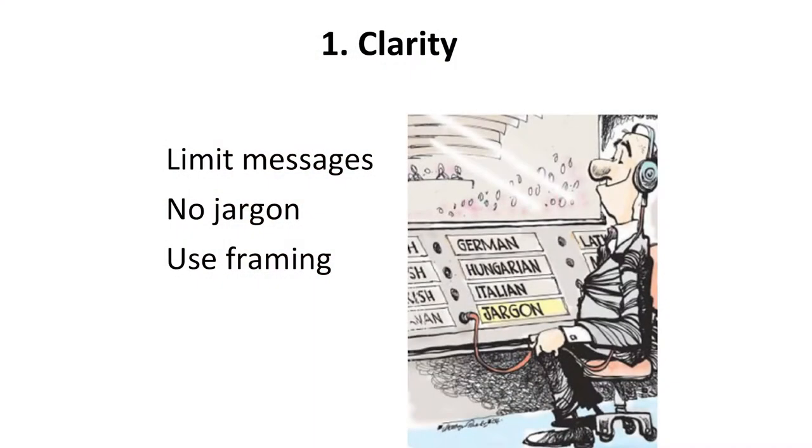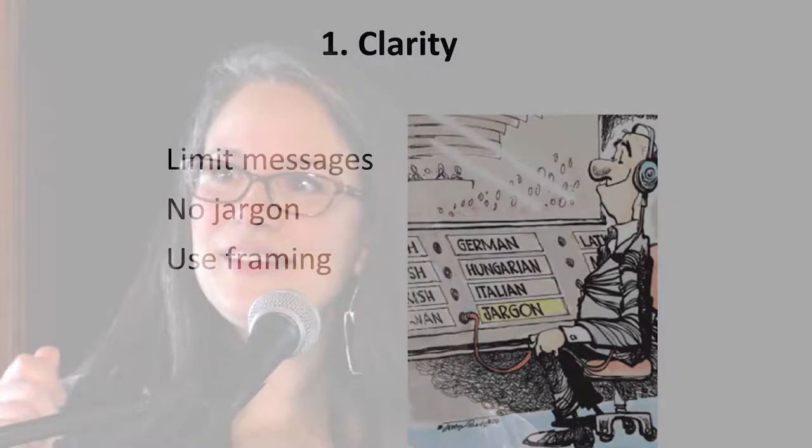I'm going to offer three points that are really essential to keep in mind when you are trying to engage new water protection ambassadors, and the first one is clarity. You want to make sure you know who your audience is and recognize that you generally can't reach many different audiences at the same time — you need to really target your messages so that it is reaching a particular audience. It's much more effective in the long run to really focus on one audience at a time, so limiting your messages is a big deal.